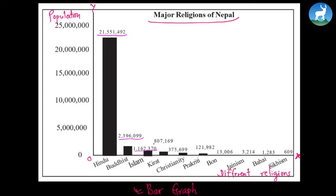Followed by 807,169 Kirat people. And then comes the Christianity, which is 375,699. There are some people who follow Prekirti religion, and the total number of people who follow this religion is 121,982. And there's a religion called Born, 13,606 people follow this. And 3,214 people follow Jainism. Baha'i people are 1,283, and 609 people are Sikh. The rectangular area is so small that it cannot even be plotted in this line. Everything is below 50 lakhs. Because a few thousands in terms of 50 lakhs is too less, so cannot be plotted. This is the bar graph that we studied.